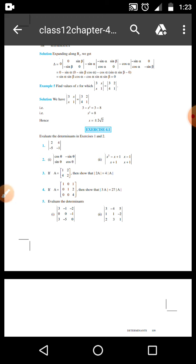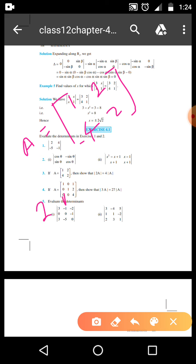Question number second, second part, it is easy, you have to do. Question number third: if A equals 1, 2, 4, 2, and 2A is equal to 1, 2, 1, 2, 4, 2, then determinant of mod of 2A is...